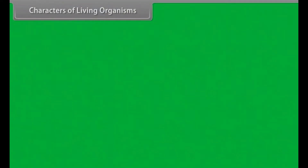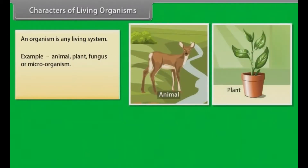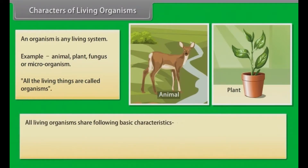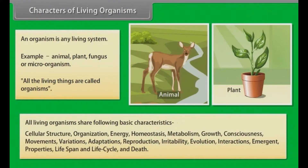An organism is any living system — for example, an animal, plant, fungus, or microorganism. All living organisms share the following basic characteristics: cellular structure, organization, energy, homeostasis, metabolism, growth, consciousness, movements, variations, adaptations, reproduction, irritability, evolution, interactions, emergent properties, lifespan, life cycle, and death.